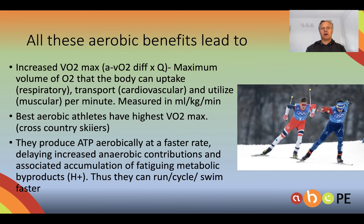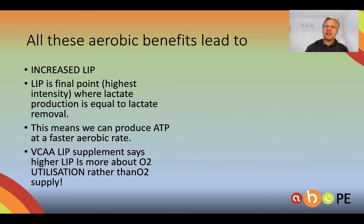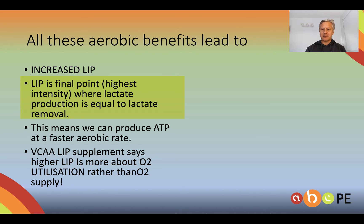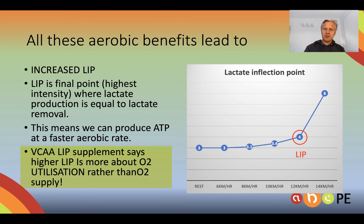All of the muscular adaptations mentioned today lead to the following aerobic benefits: an increased VO2 max — the very best aerobic athletes in the world have the highest VO2 maxes, generally cross-country skiers. A further benefit is increased LIP — the lactate inflection point being the final point in exercise where lactate production and lactate removal are balanced. This means we can produce ATP at a faster aerobic rate, delaying the contributions of the anaerobic systems. VCAR tells us that LIP is more about oxygen utilisation than oxygen supply. Here is a LIP pre-training diagram.